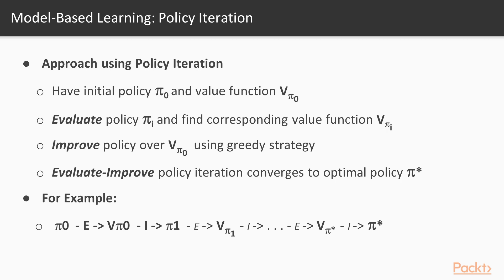How does policy iteration work? Given some initial policy pi sub zero, the approach is to evaluate policy pi sub i and find the corresponding value function v pi sub i. Then we try to improve the policy over v sub pi using greedy exploration. This process of evaluating and improving continues until there is convergence on the optimal policy pi star.